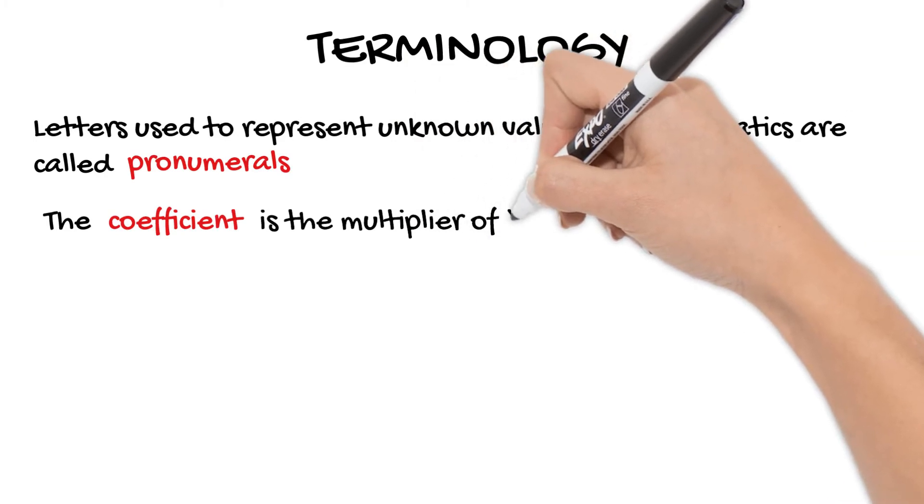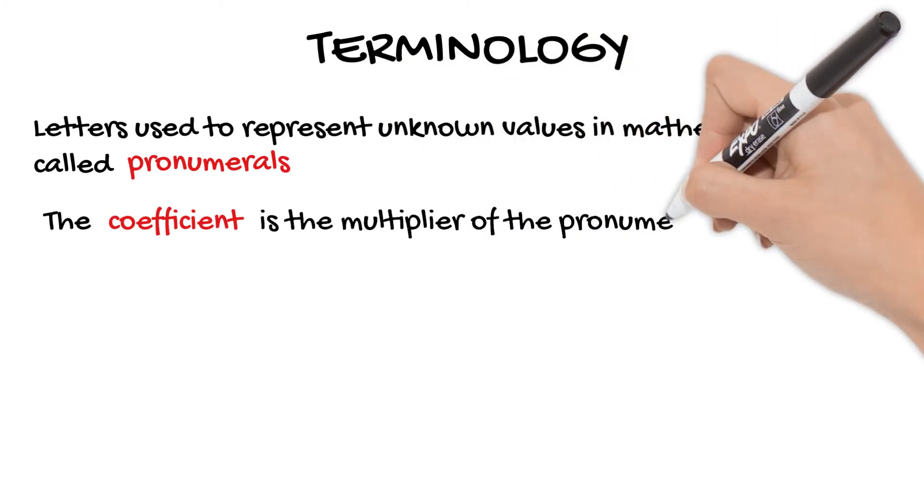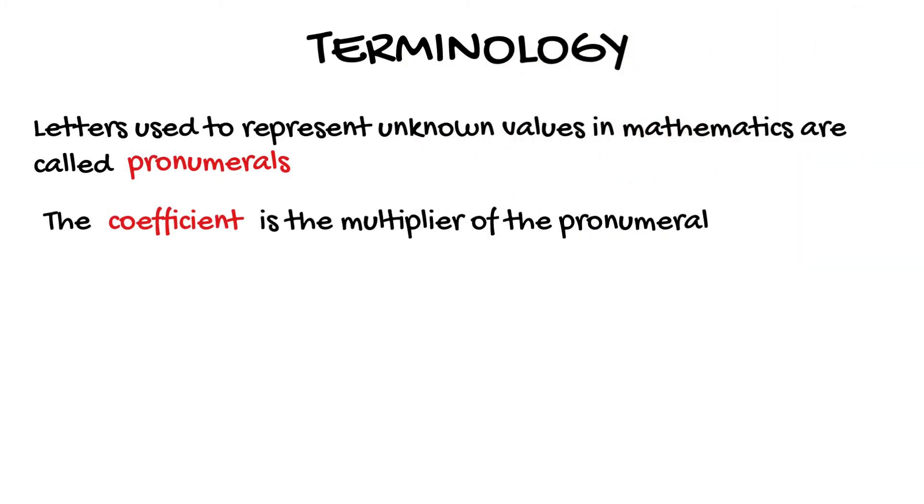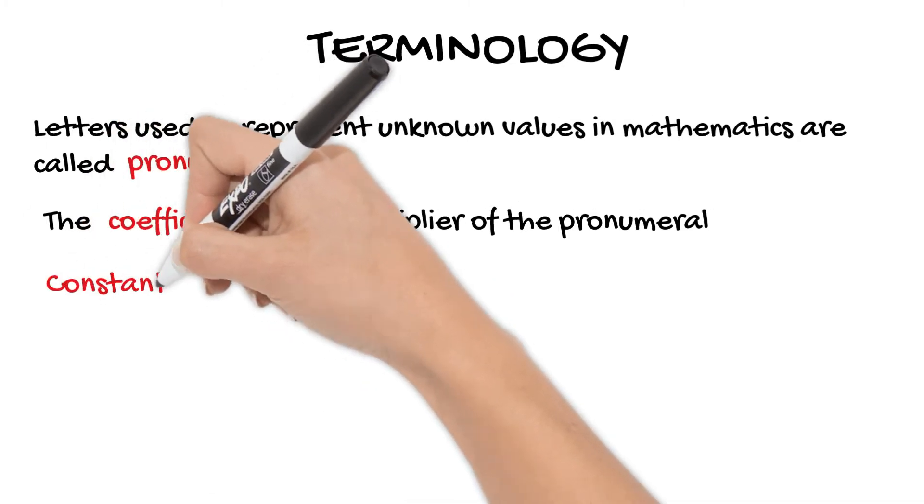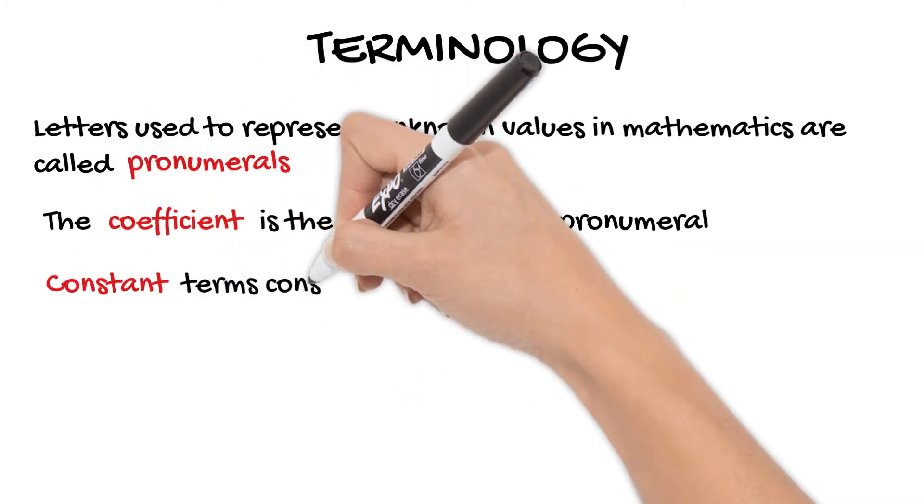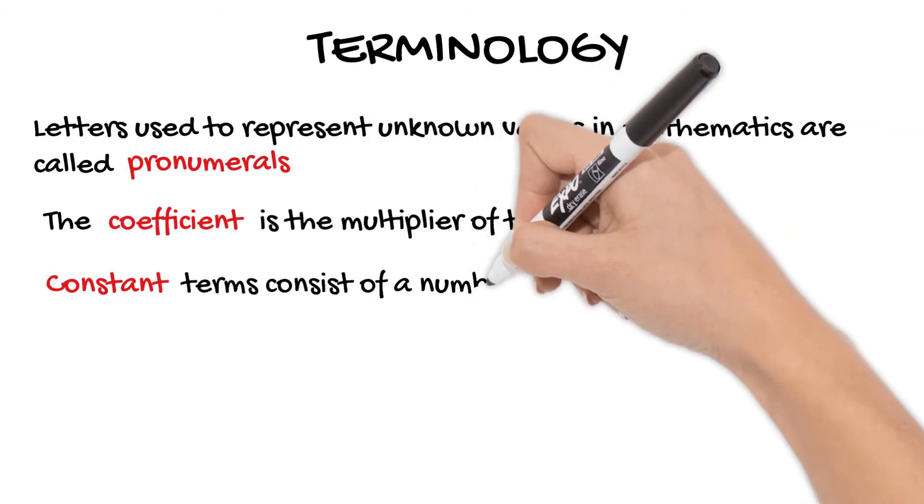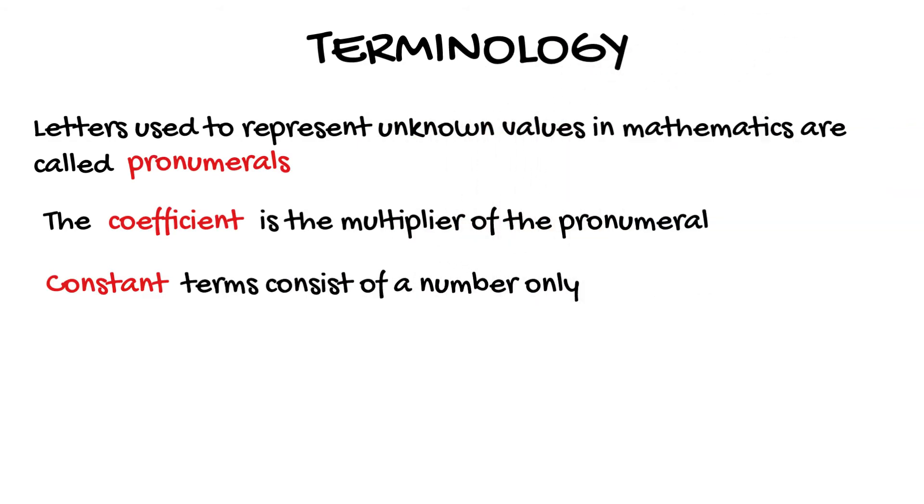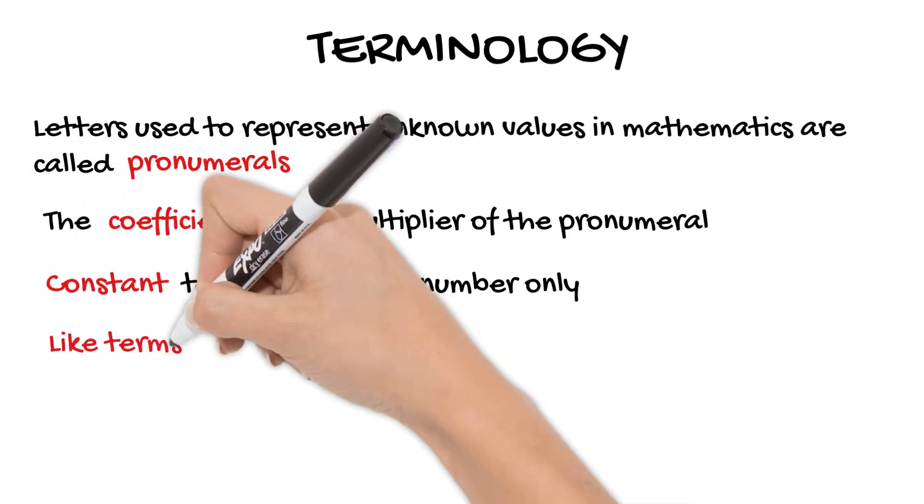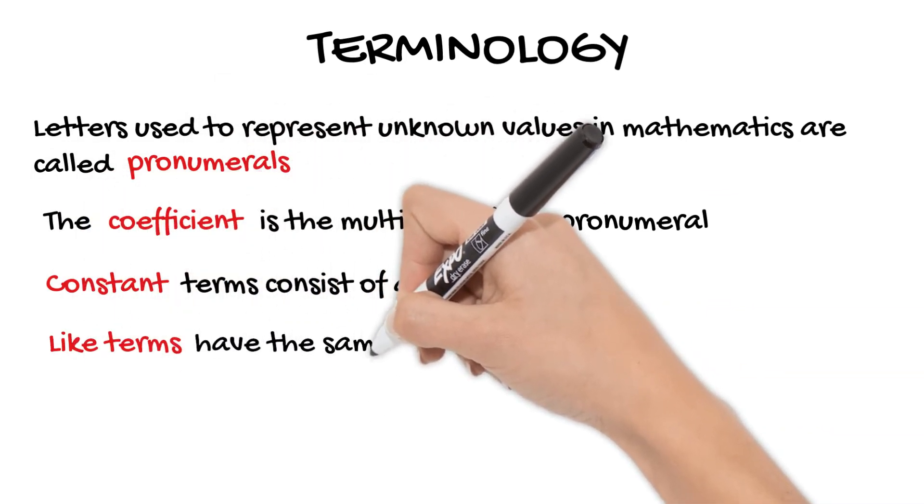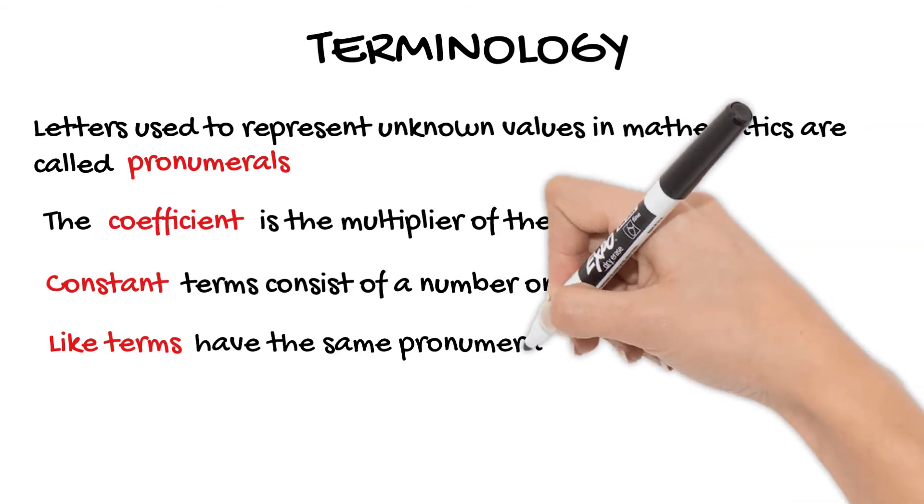Then we have constant terms which are simply a number. So no letter, no pronumeral, just a number. And then of course like terms, that's probably the trickiest one. Like terms have exactly the same pronumerals. So x and 2x, they are like terms for example.